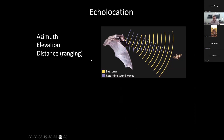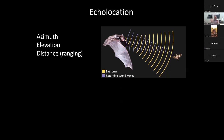Echolocation — we all know generally what that is, but to dive into more detail: any echolocating animal or system has to be able to calculate three positions of a target. We have the azimuth or horizontal direction, the elevation or vertical direction, and the distance — how far away the object is, which we often refer to as ranging. What's really distinctive about echolocation is this last one — the ability to determine distance to objects with high precision. Estimates range from about a centimeter precision all the way down to sub-millimeter precision, depending on the bat and the system.